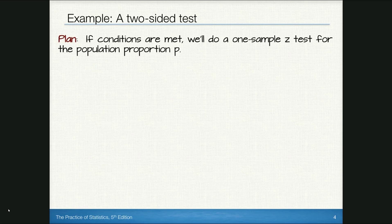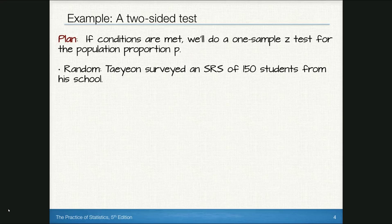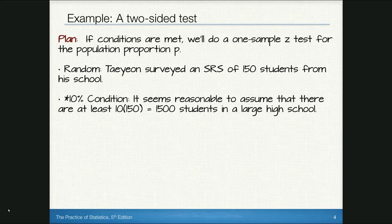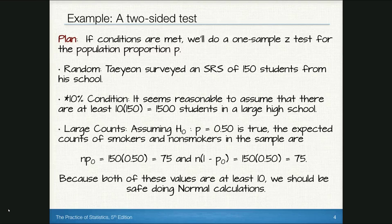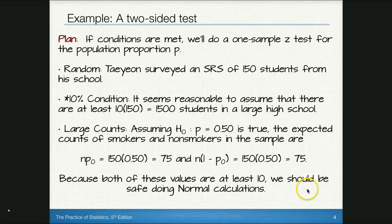For the Plan step, if conditions are met we'll do a one-sample z-test for the population proportion p. For randomness: Taeyeon surveyed a simple random sample of 150 students, so that condition is met. For the 10% condition: it's reasonable to assume there are at least 1,500 students in a large high school. For large counts: assuming the null is true, expected counts of smokers and non-smokers are 150 × 0.50 = 75 and 150 × 0.50 = 75 — both at least 10 — so we're safe doing normal calculations.